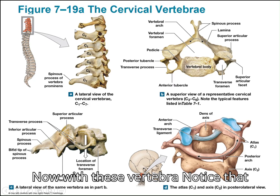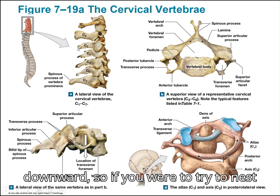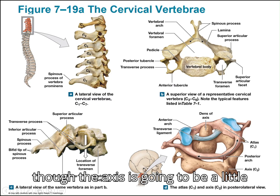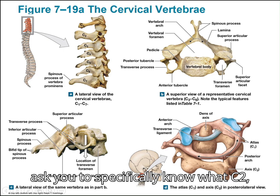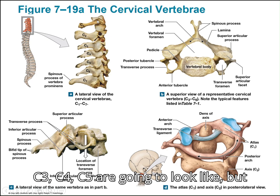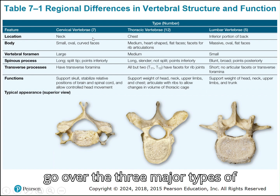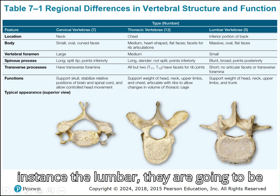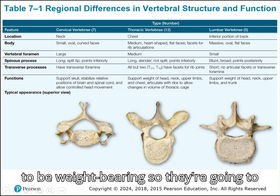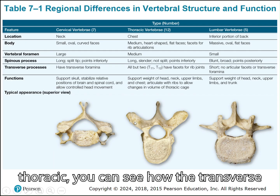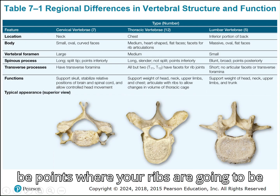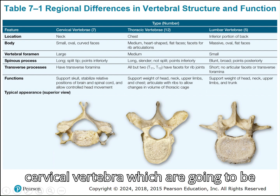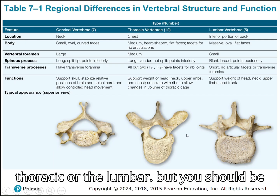With these vertebrae, the spinous process points downward. The larger ones are generally toward the bottom; they start smaller at the top, though the axis is a bit larger due to the dens. You should be able to identify C1 and C2. A comparison table covers the three major types of vertebrae. The lumbar vertebrae are stout and strong — weight-bearing — with a wide base. The thoracic vertebrae have transverse processes angled upward, serving as attachment points for the ribs as part of the thoracic cage. Cervical vertebrae look distinctly different from thoracic or lumbar — you should be able to differentiate between the three types.